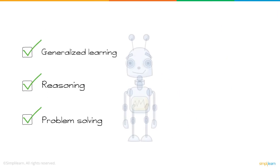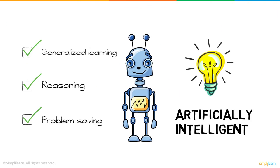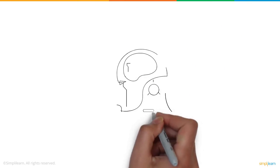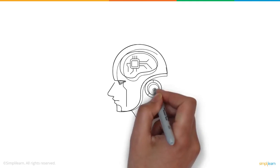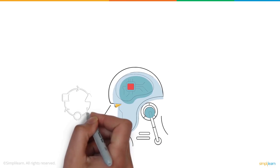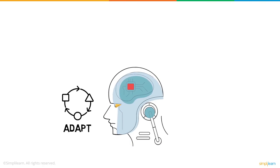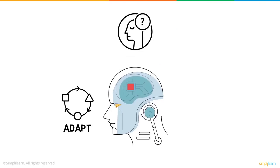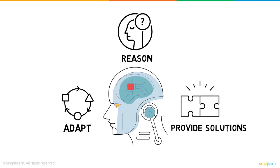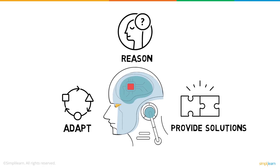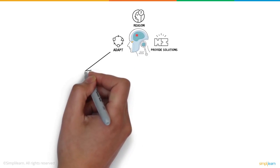These three capabilities make the robot artificially intelligent. In short, AI provides machines with the capability to adapt, reason, and provide solutions. Now that we know what AI is, let's have a look at the two broad categories AI is classified into.